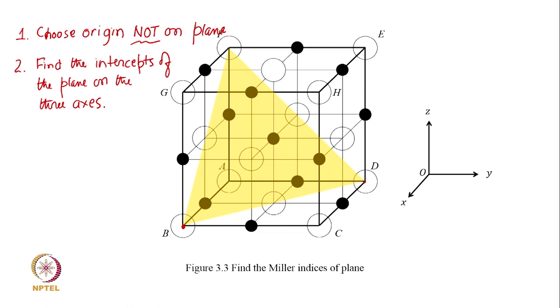Obviously, if you choose the origin on the plane, what is the intercept? All three intercepts are 0. Now, if I choose some other plane passing through the same origin, different plane, what will be the intercept of that different plane? Again 0, 0, 0. So, 0, 0, 0 will not be a meaningful intercept and will not give me any meaningful information about what plane I am talking about.